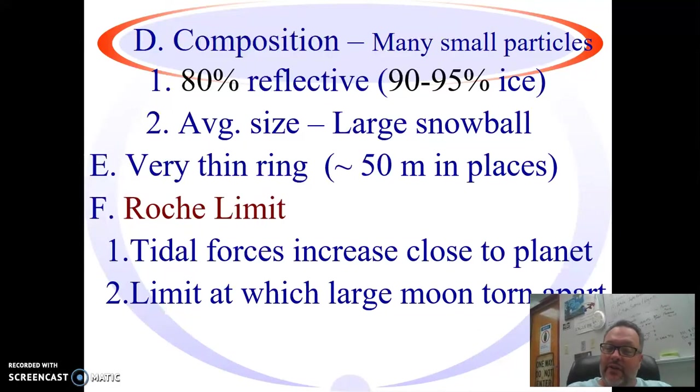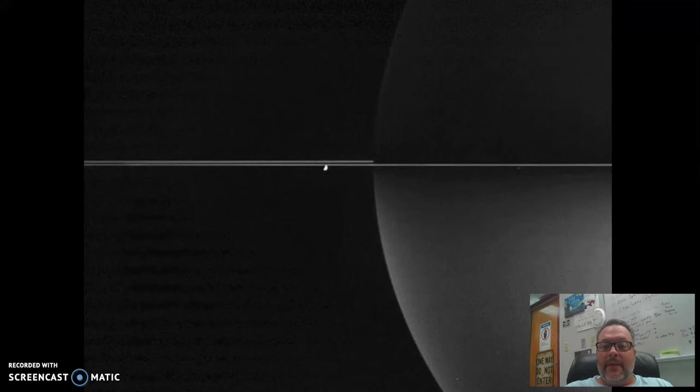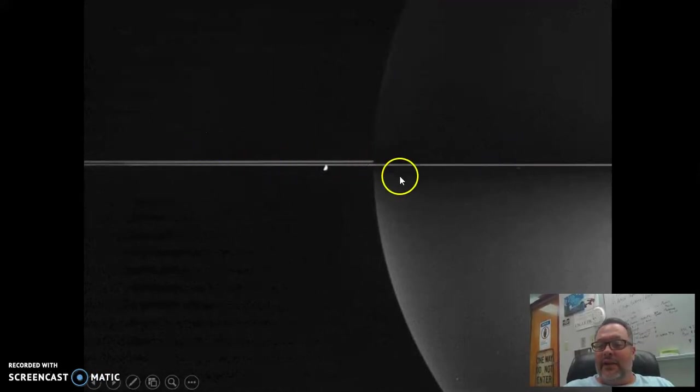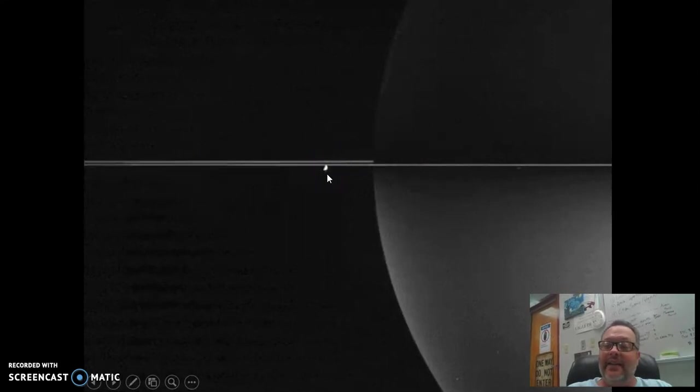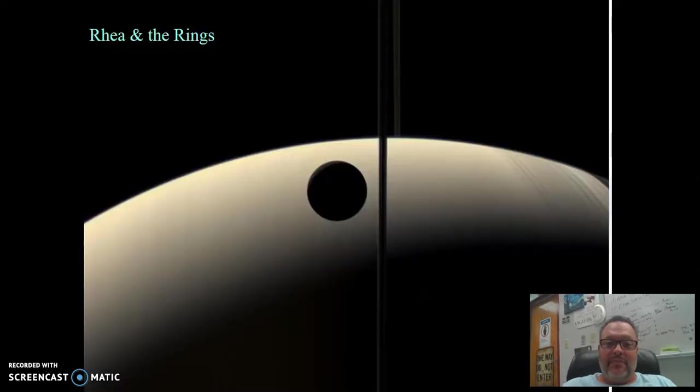Within the Roche limit, you can have rings. Outside of the Roche limit, you can have large moons. It's kind of neat. Look at that. So here you have the super thin ring from the side. And there's one of the moons, which, again, is outside the Roche limit, which allows it to survive there and not break up.